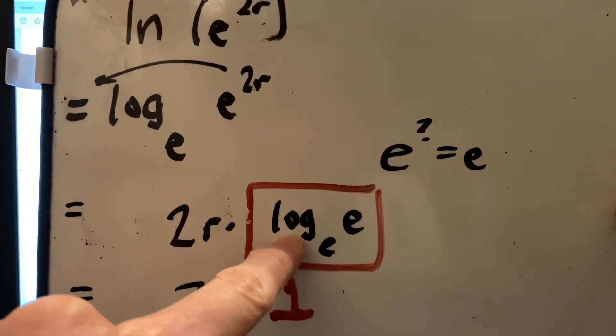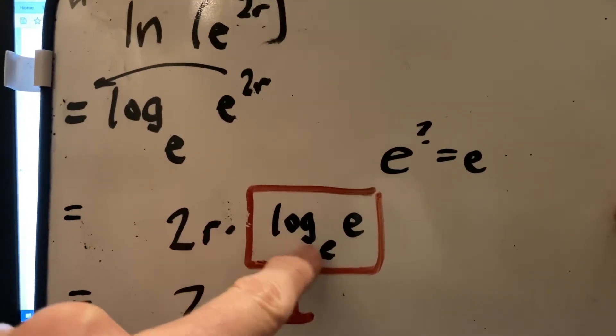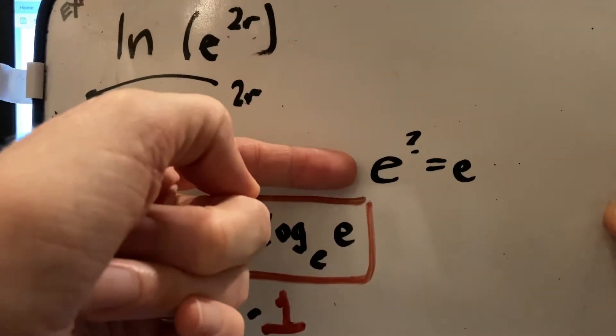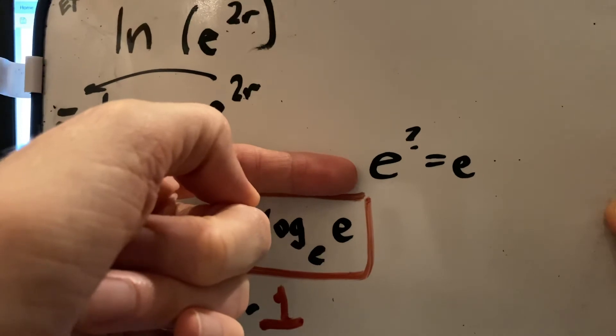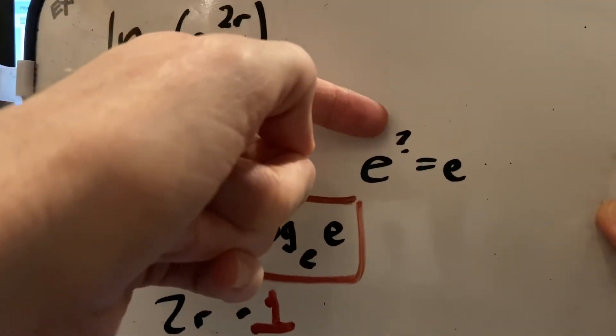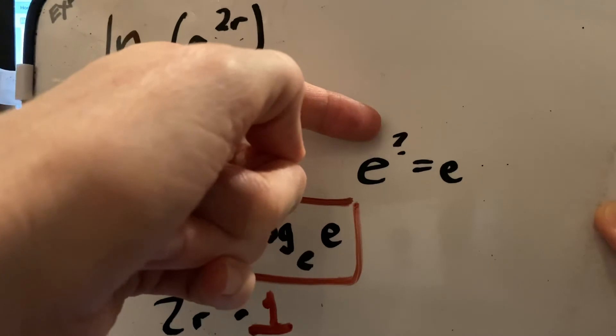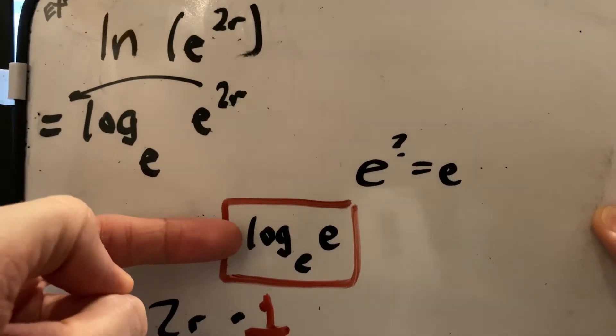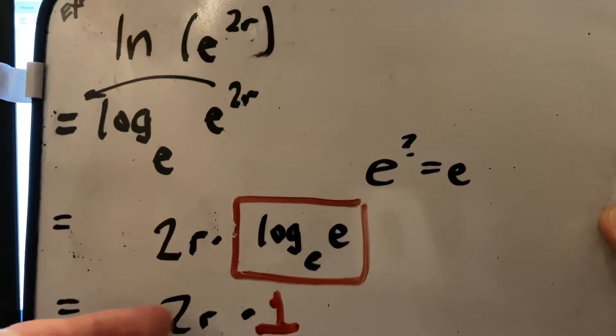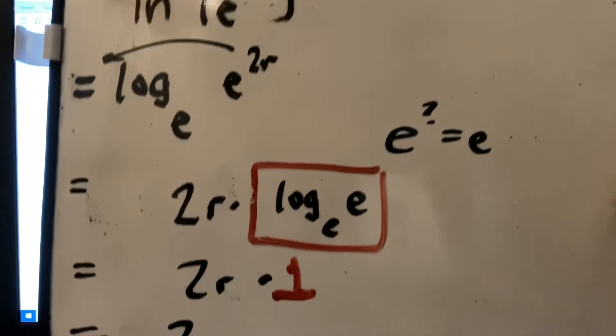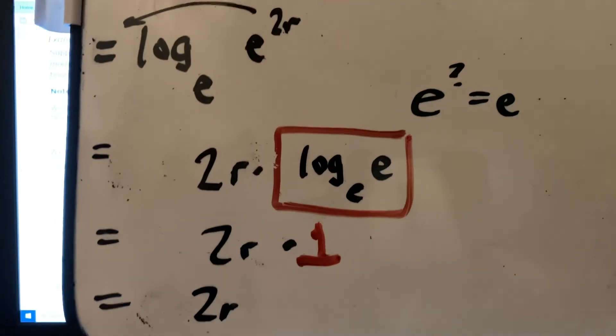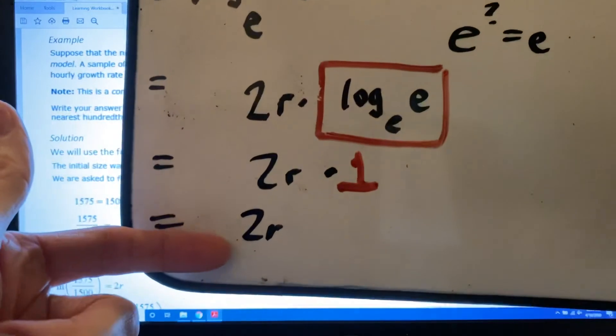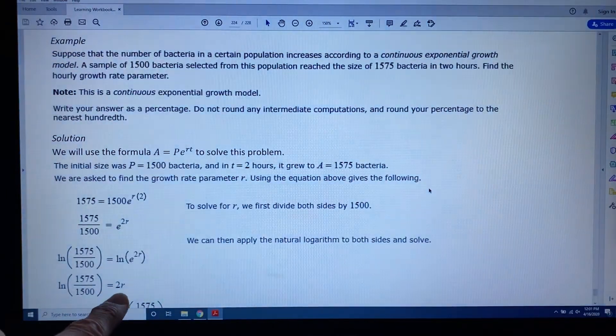Log base E of E. What is the exponent that goes on base E to make E? Write it this way: E to the question mark equals E. Well, the missing value, the missing exponent is 1. E to the first power equals E. Therefore, log base E of E equals 1 because that's the missing exponent. And 2R times 1 is just 2R because anything times 1 is itself. So that proves that natural log of E to the 2R equals 2R, which we see here in this problem.